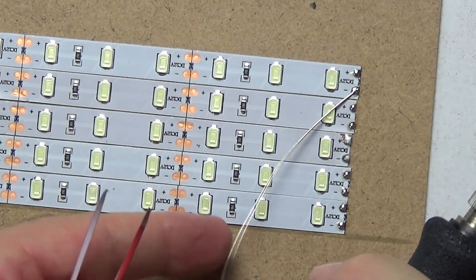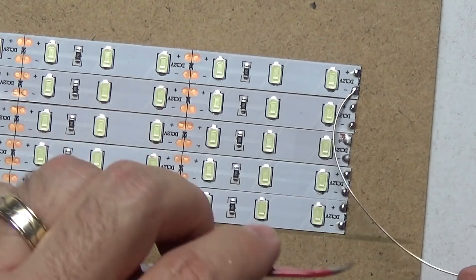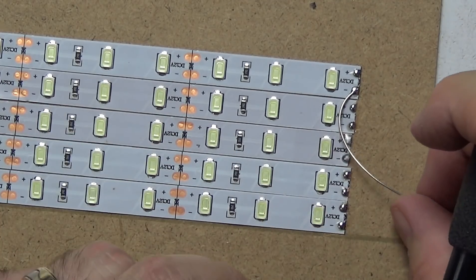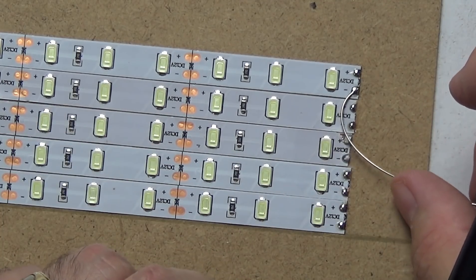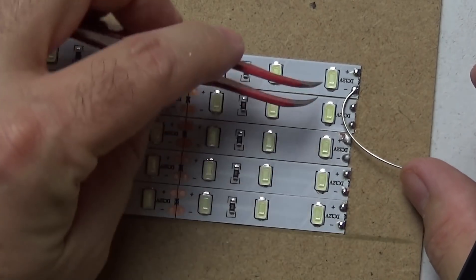Okay, so on my right hand side, I'm going to use that for all the negatives, and I'm going to do the positives on the left. So now we just use our piece of wire and do a zigzag snake pattern and solder that down.